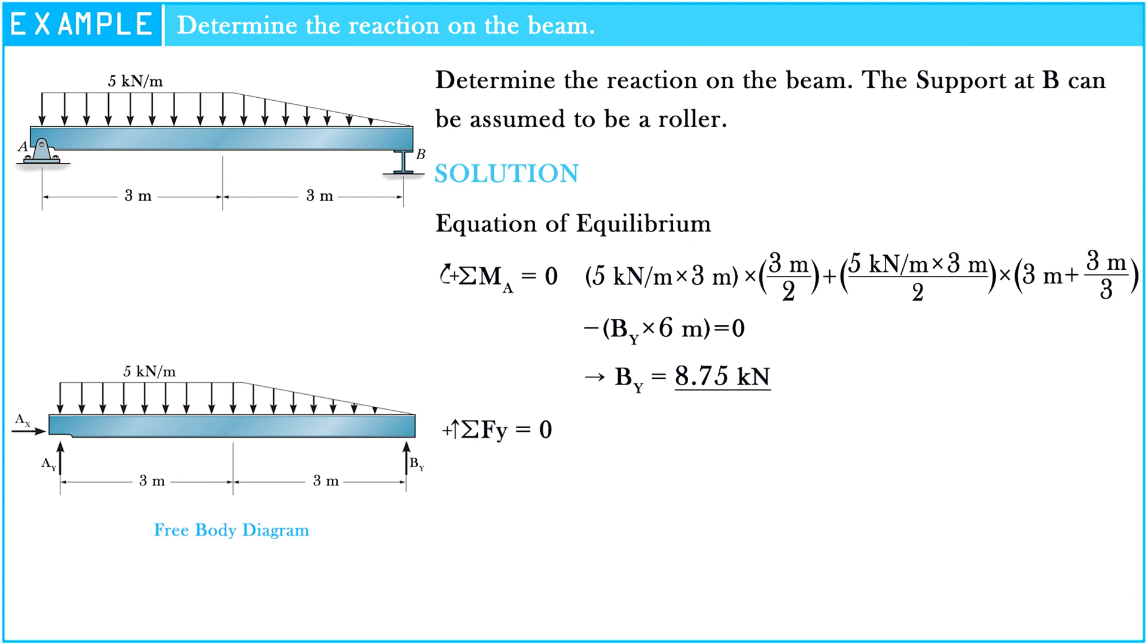The sigma of force along x-axis is equal to 0. The sigma of force along y-axis is equal to 0. So, AY plus 8.75 kN, minus 5 kN per meter multiply by 3 meter, minus 5 kN per meter multiply by 3 meter divided by 2 is equal to 0. Hence, AY is equal to 13.75 kN.